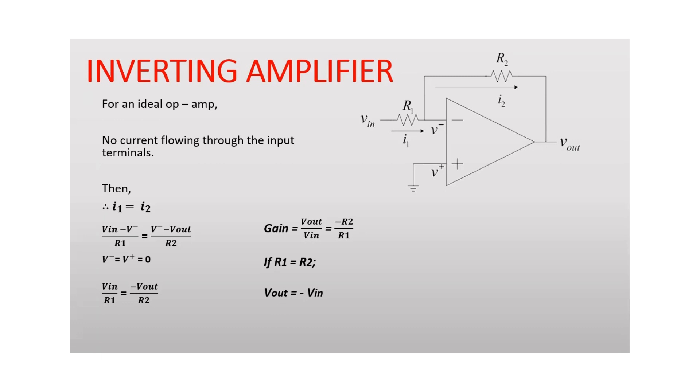We all know there is no current flowing to the input terminals. Then we can say that I1 is equal to I2, since there is no current flowing to the inside of the operational amplifier to the V minus terminal.